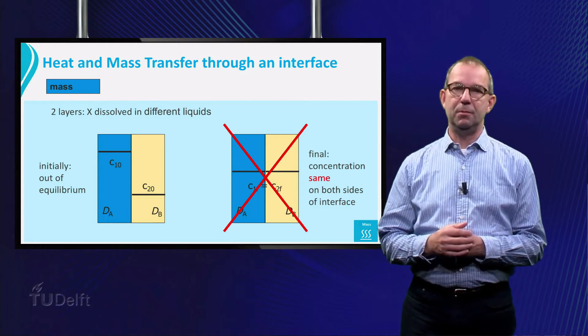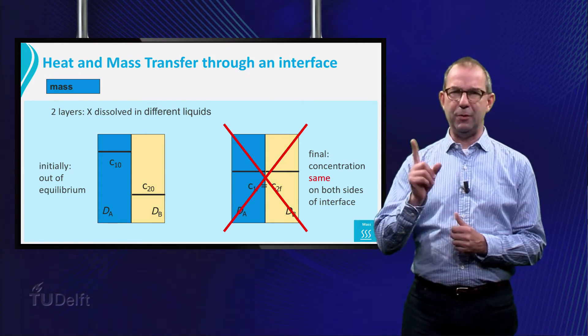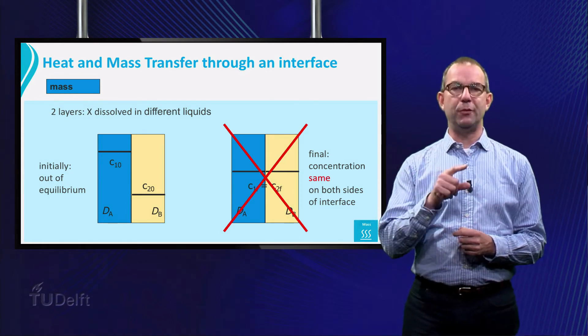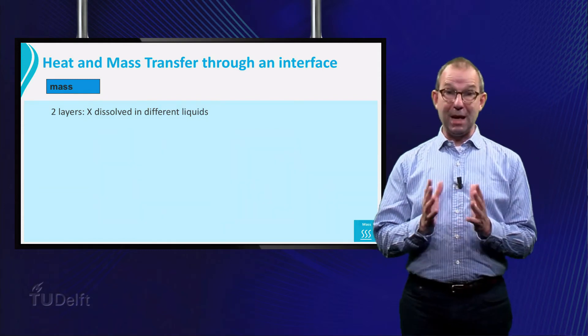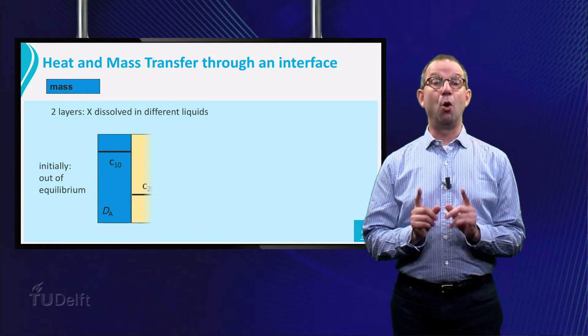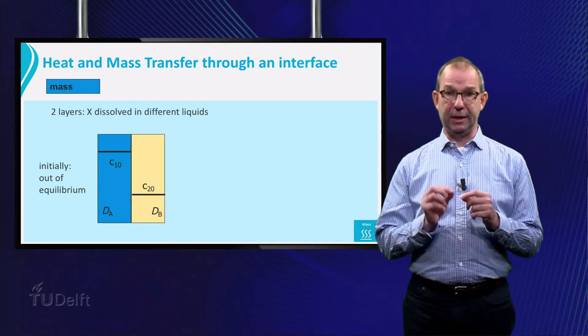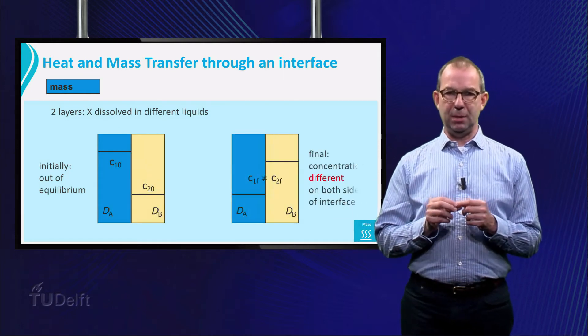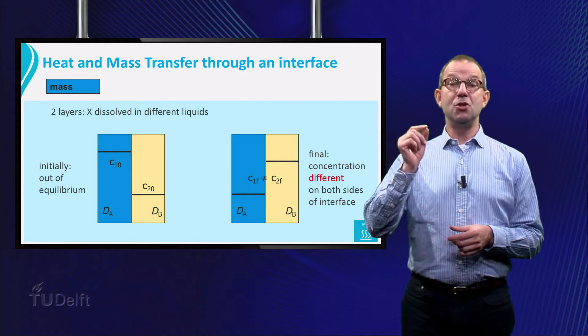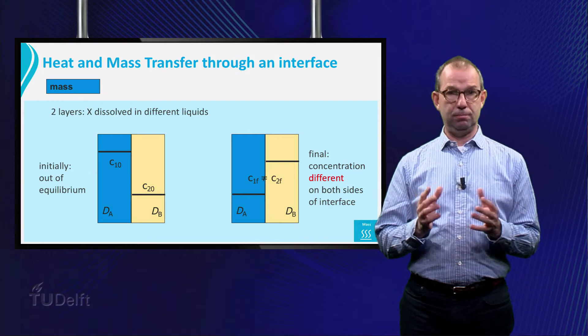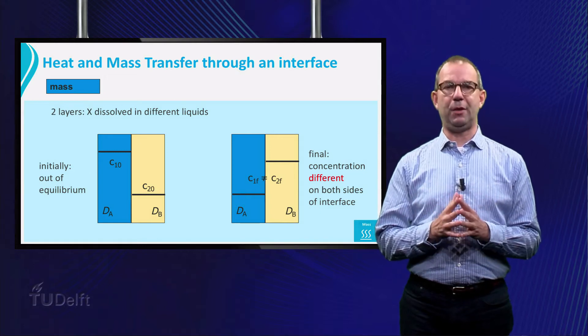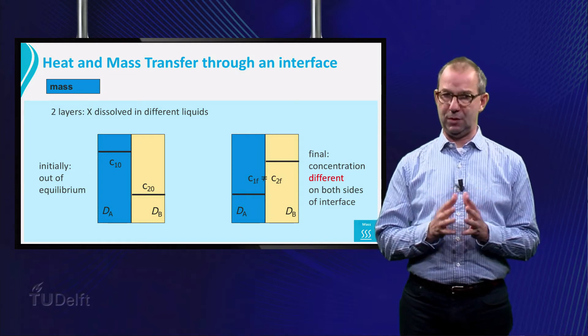In equilibrium the temperature in a system is the same everywhere, and there is no driving temperature difference for the heat flow anymore. But with mass transfer we need to be more careful. Apparently a system can be in equilibrium, but not have a uniform concentration of species. So we have to rethink our definition of a driving force for mass transfer.